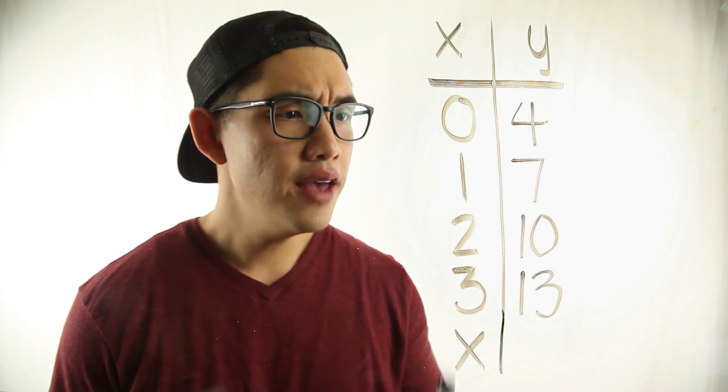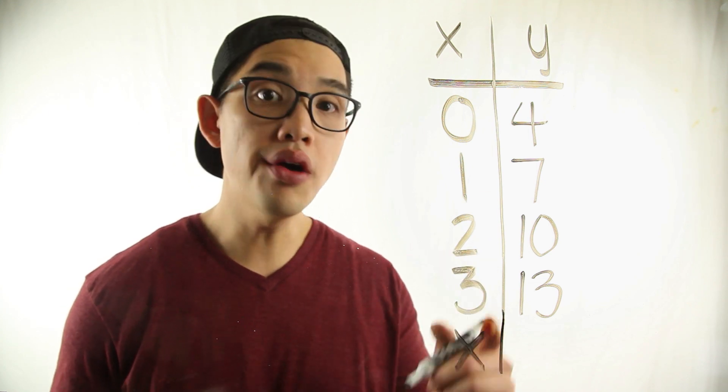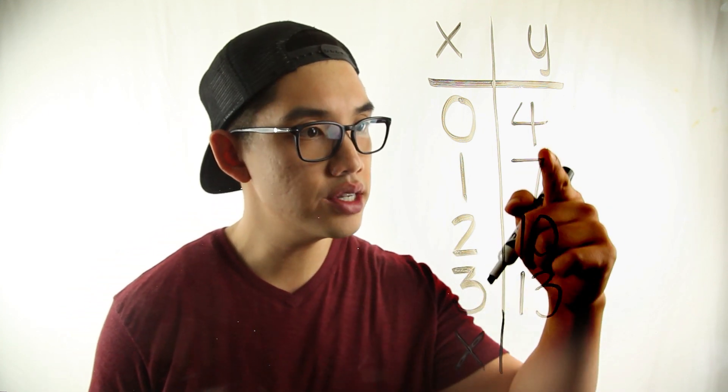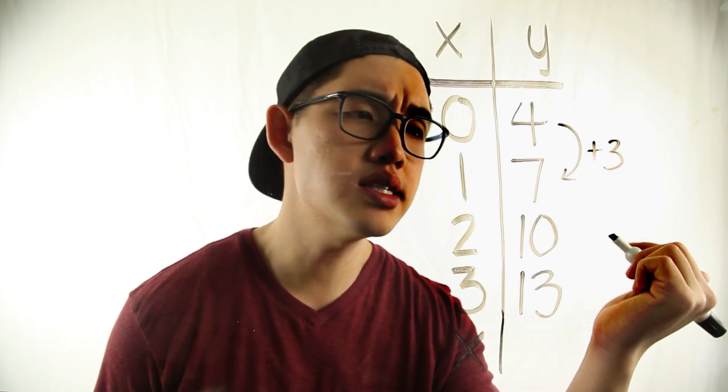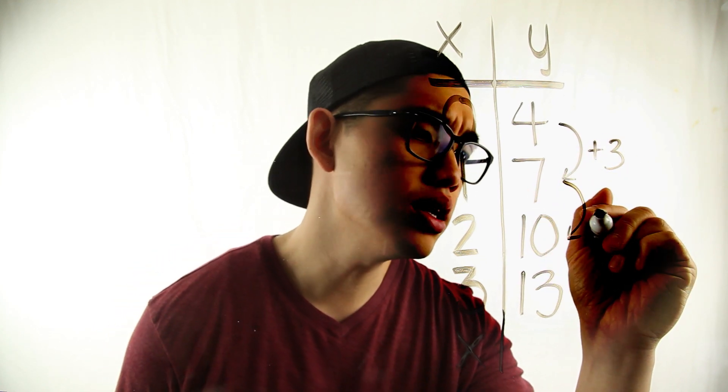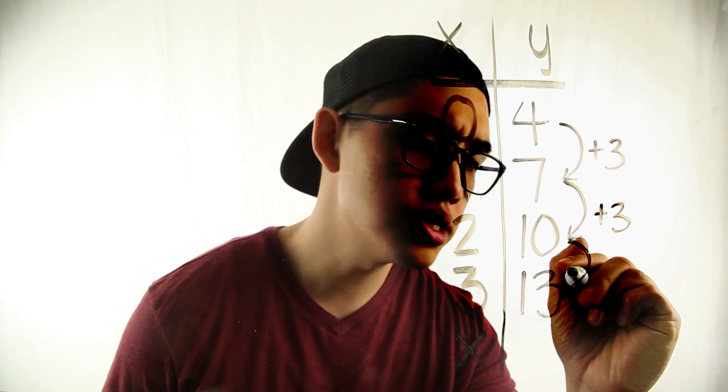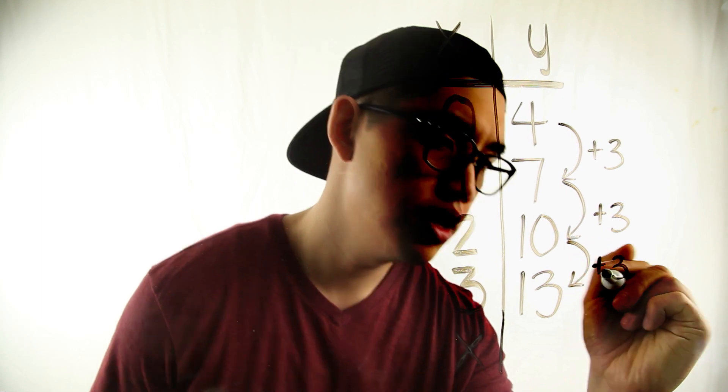Alright let's get to it. If you take a look at this function table right here, I see a pattern. Every single time I go down I'm adding by three. I add three here. Four plus three equals seven. Seven plus three equals ten. And ten plus three equals thirteen.